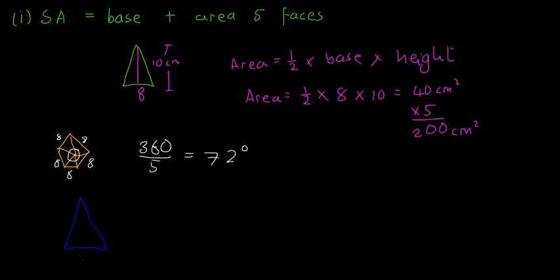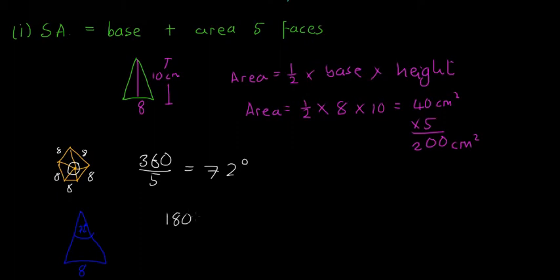We have to find the area of this triangle. Since it's isosceles, the two base angles are equal. So 180 minus 72 = 108 degrees remaining, and dividing by 2 gives us 54 degrees for each base angle — so the angles are 72 at the top and 54, 54 at the bottom.